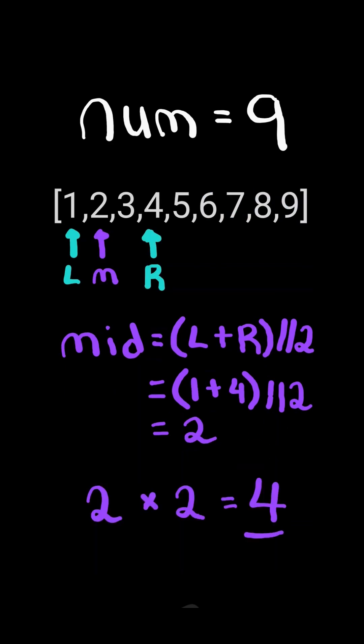Now, mid points to 2. We calculate 2 times 2. It's less than num, so we ignore the values to the left of mid and increase our left pointer to mid plus 1.